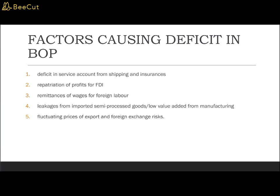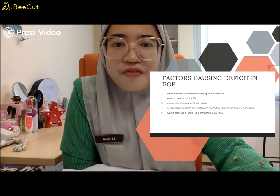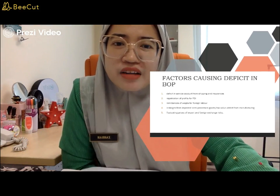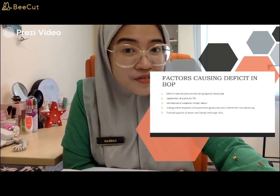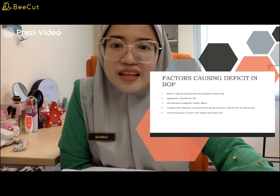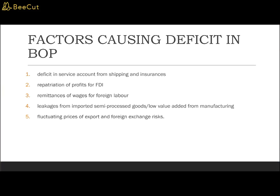What are the factors causing a deficit in the balance of payment? First, deficit in the service account from shipping and insurance. Second, the repatriation of profits for FDI (foreign direct investment). Third, the remittances of wages for foreign labor. Fourth, leakages from imported semi-processed goods or low value-added from manufacturing. And finally, fluctuating prices of exports and foreign exchange risk.